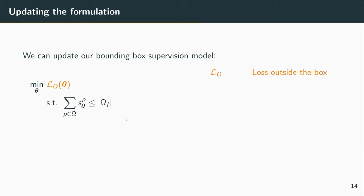So we can use that to update the previous formulation that we had. We'll define, we'll note as LO, the loss for outside the box, how we supervise the pixels that we know to be background. We won't detail now exactly how we actually do that. Those details are in the paper.